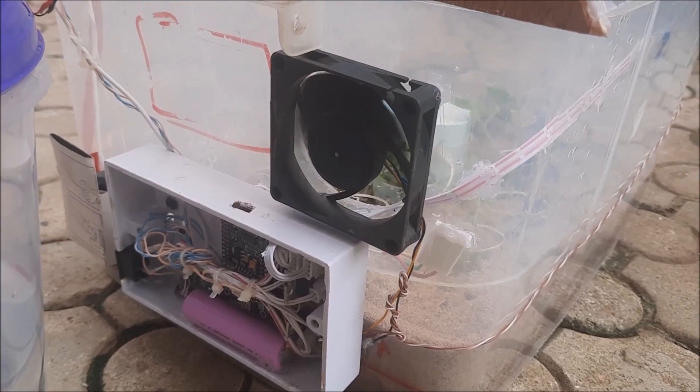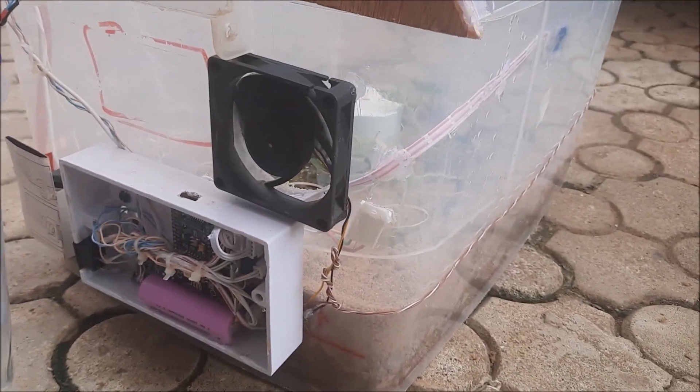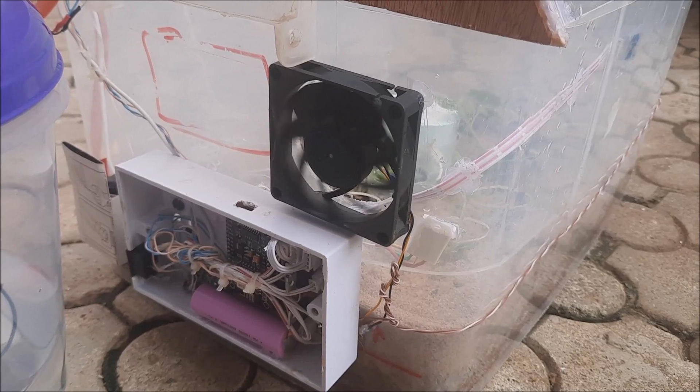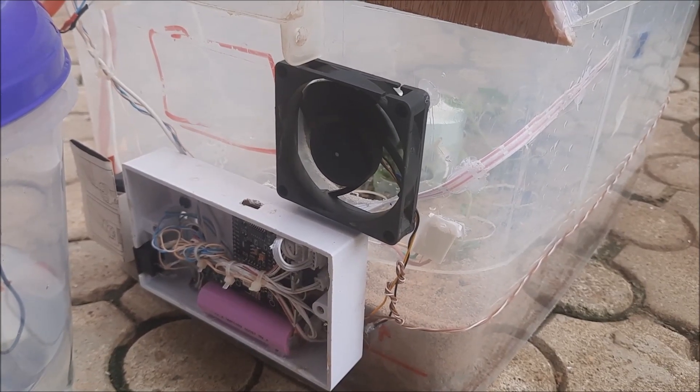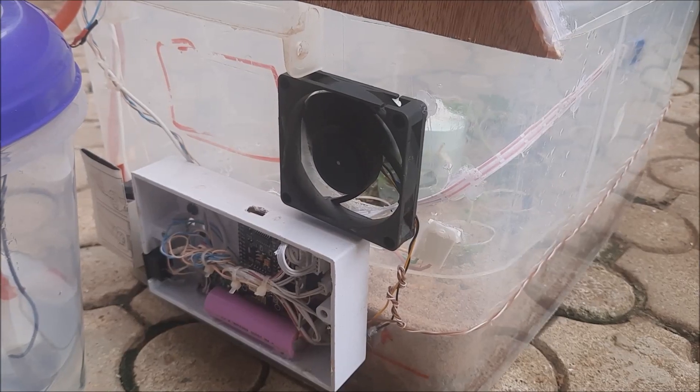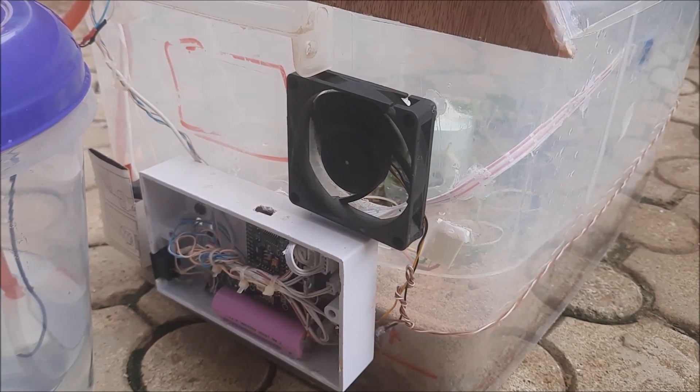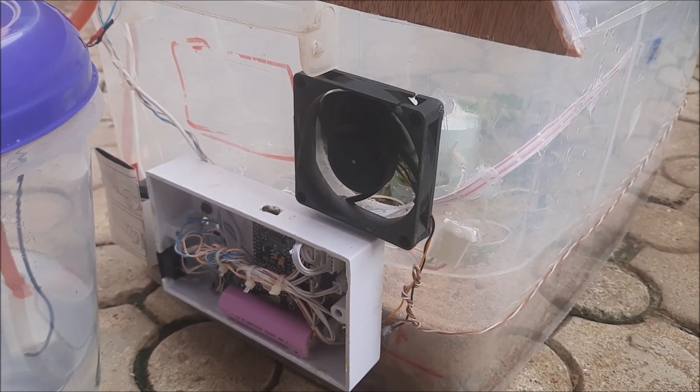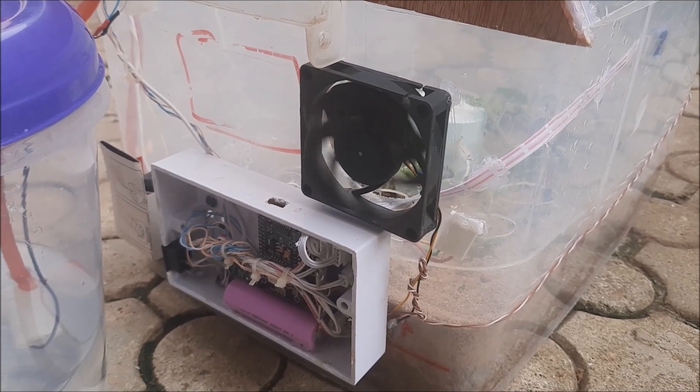The DC fans are spontaneously turned on to circulate and ensure air is let in and out of the model greenhouse. This would in turn control the temperature around the plants in the greenhouse project. The fan coming on is programmed to start at a particular temperature sensed by the DHT22 sensor.